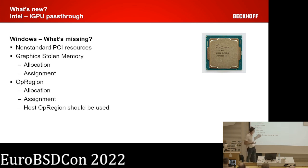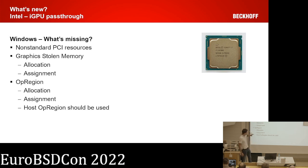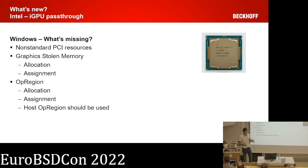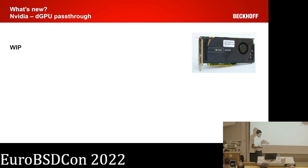The Linux and BSD drivers don't care about those non-standard resources, but the Windows driver does. There's a so-called Graphics Stolen Memory that must be allocated and assigned to the device, and there's also the so-called OpRegion which must be allocated and assigned, and you also have to use host configuration data because the OpRegion contains configuration information that must match the host configuration. For Nvidia dedicated graphics cards it's still work in progress.